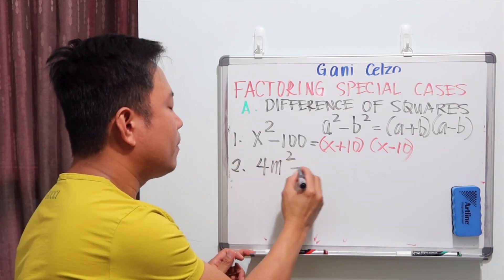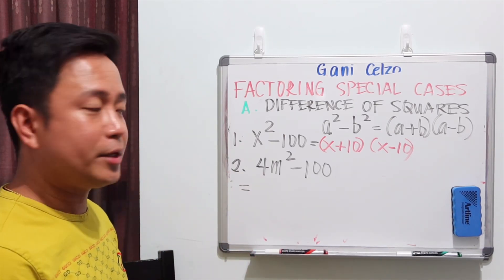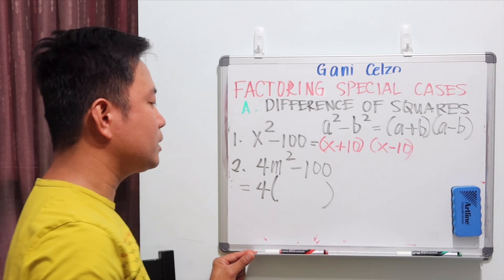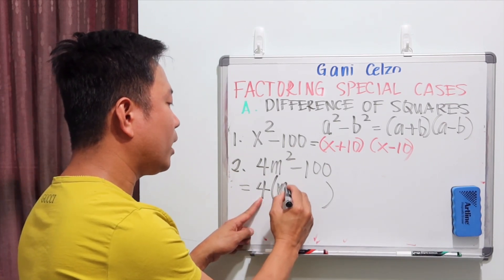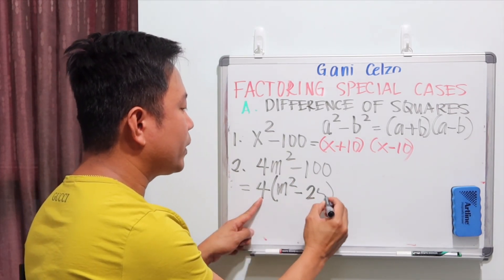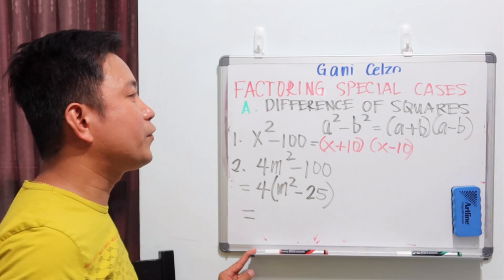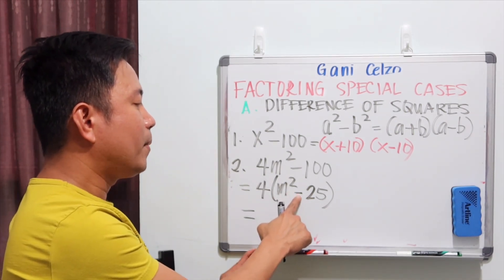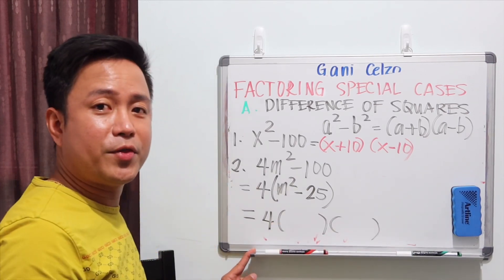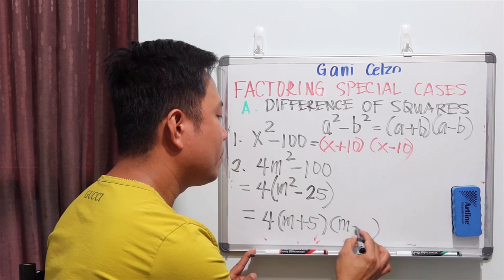In this next problem, there is a GCF of 4. So we factor out 4 first. Inside the parentheses, 4 times m² gives 4m², and 4 times -25 gives -100. Now m² - 25 is a difference of perfect squares — perfect square minus perfect square. So the final answer is 4(m + 5)(m - 5).